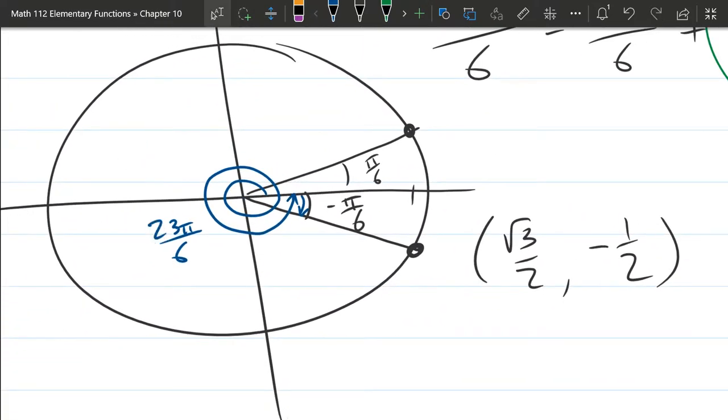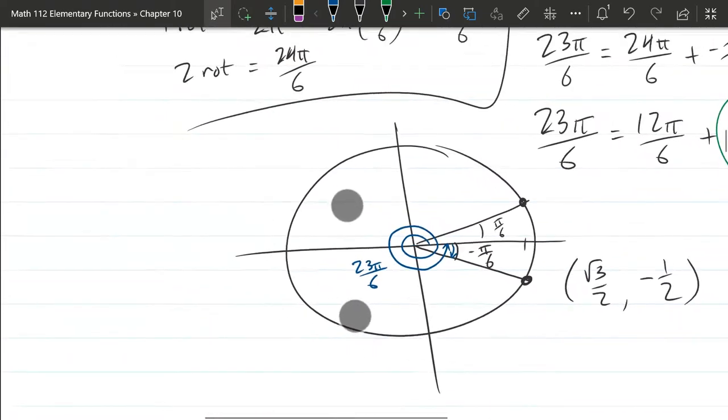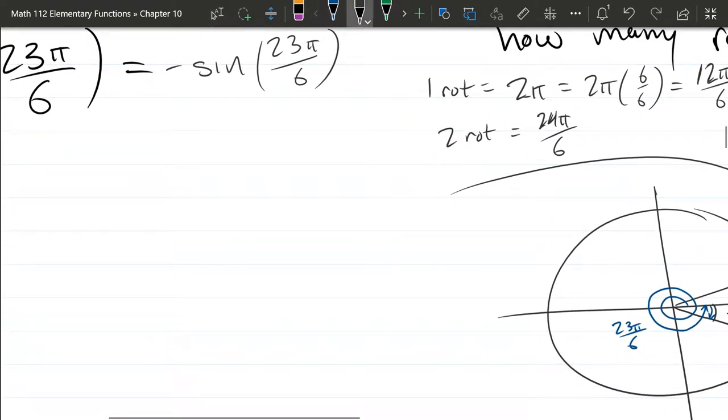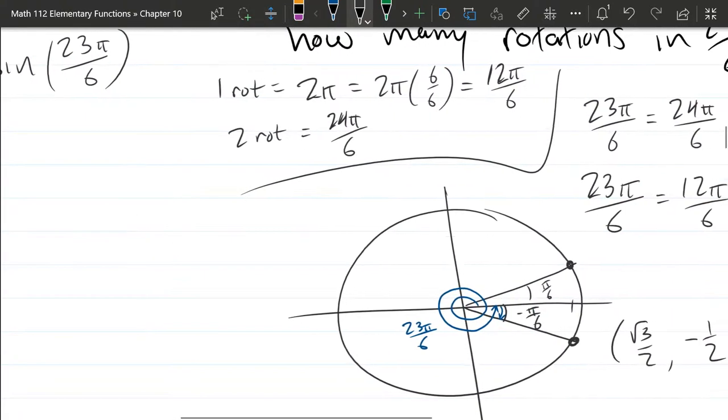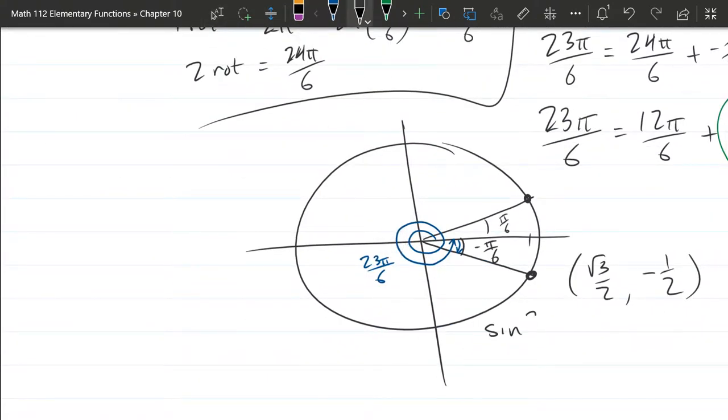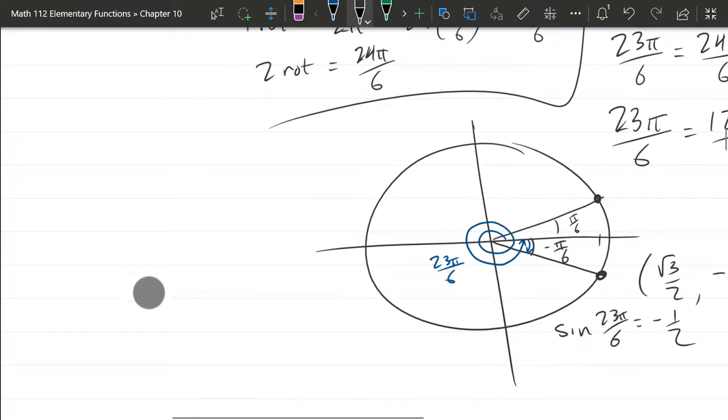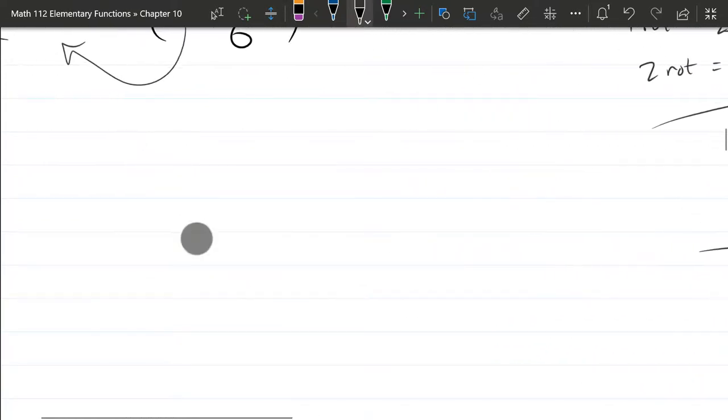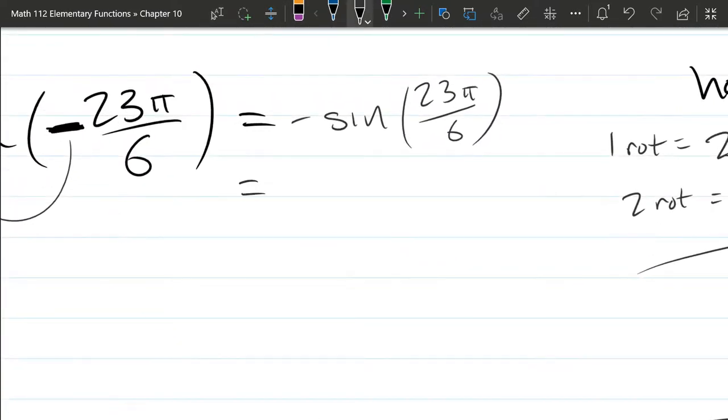Alright, so we have enough information to go back and answer our question. We're asked about sine right here. So sine 23π over 6 equals that y value you see right there, negative 1 half. Alright, so we're going to take this back to our original question up here. So that sine turned into negative 1 half. There's also another negative out front. So two negatives, of course, cancel out to just be 1 half, positive 1 half here.